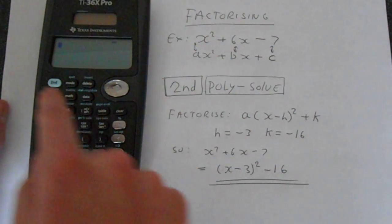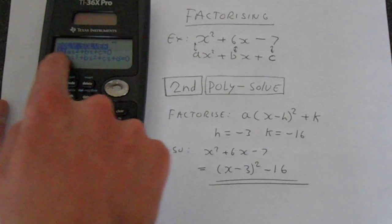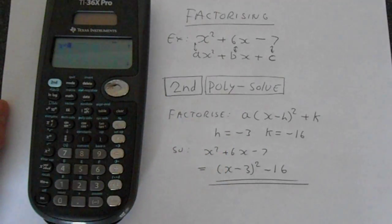So we'll just do this example here. If you go second function, then you go polysolve, which is on the cos button. Then this is in the form that we want, so just go to 1 or enter.